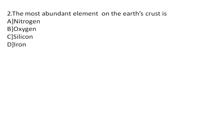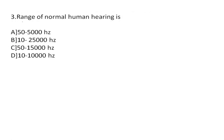The most abundant element in the Earth's crust — options are nitrogen, oxygen, silicon, iron — and the right answer is oxygen. Next question: the range of normal human hearing is 50 Hz to 15,000 Hz.